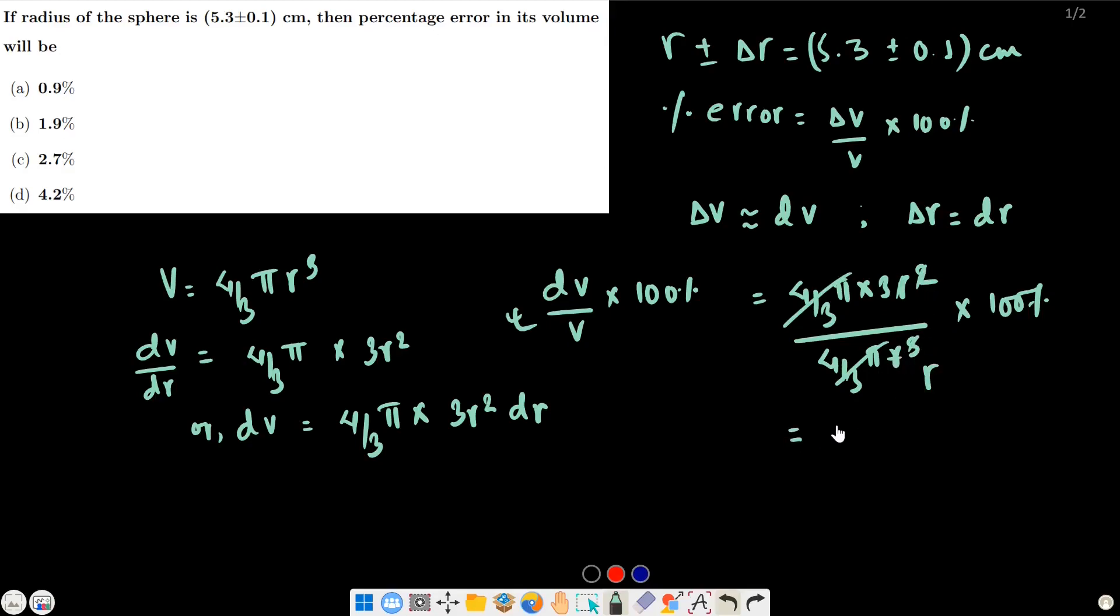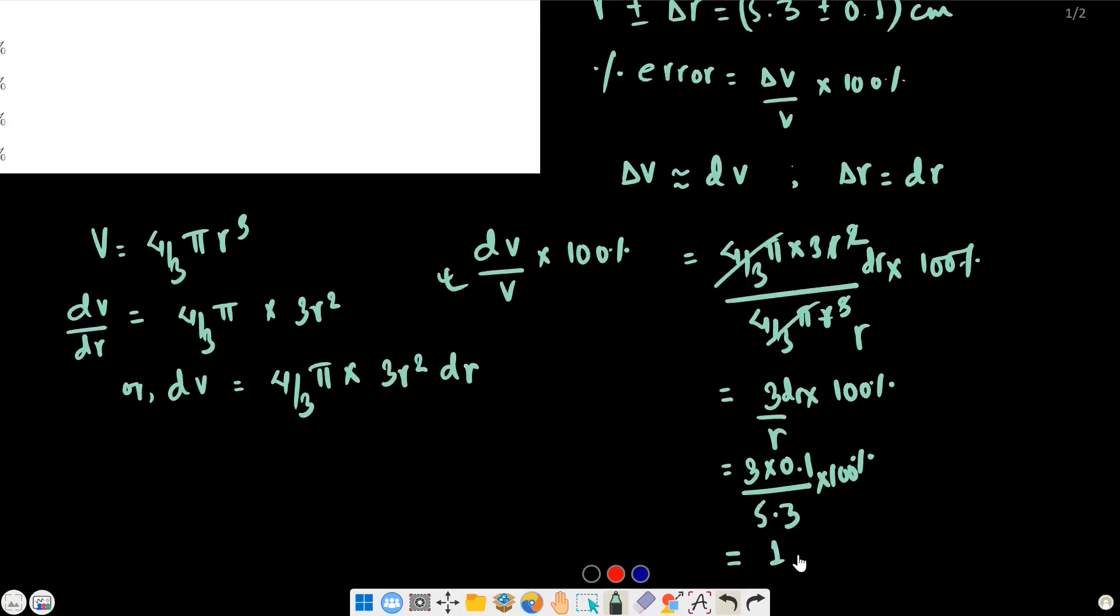So this is equal to 3 by r into 100 percentage. Substituting dr = 0.1 divided by r = 5.3, into 100 percent, gives 1.9 percent.